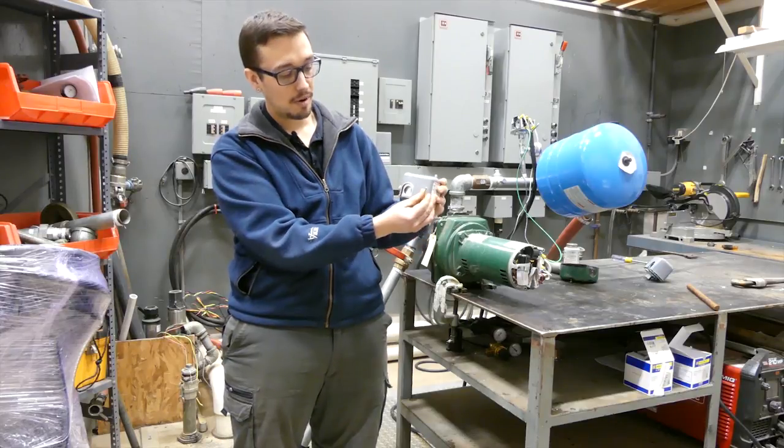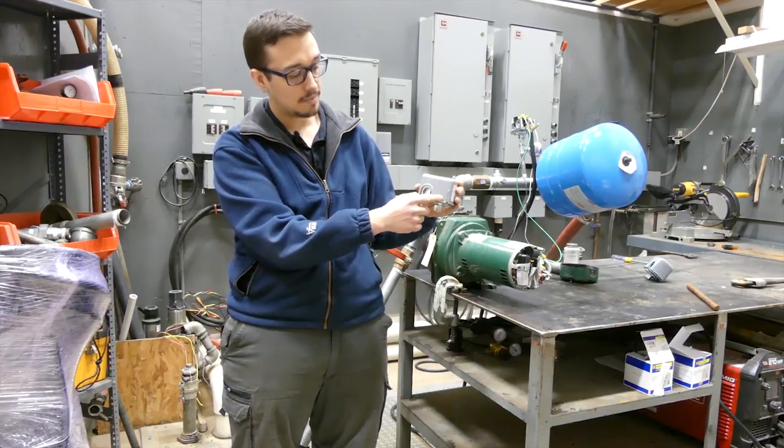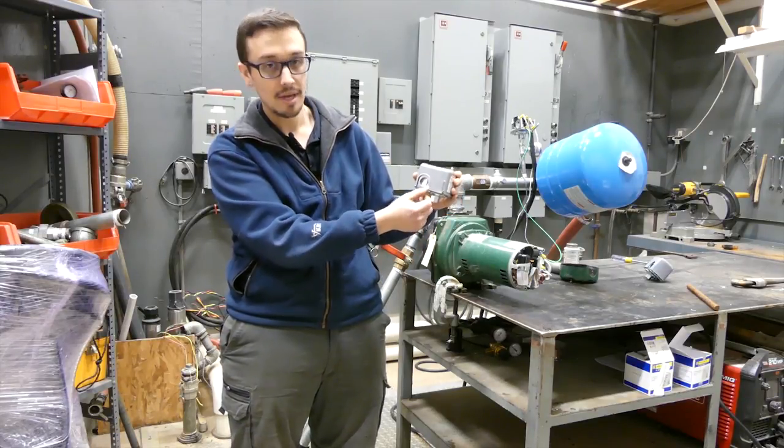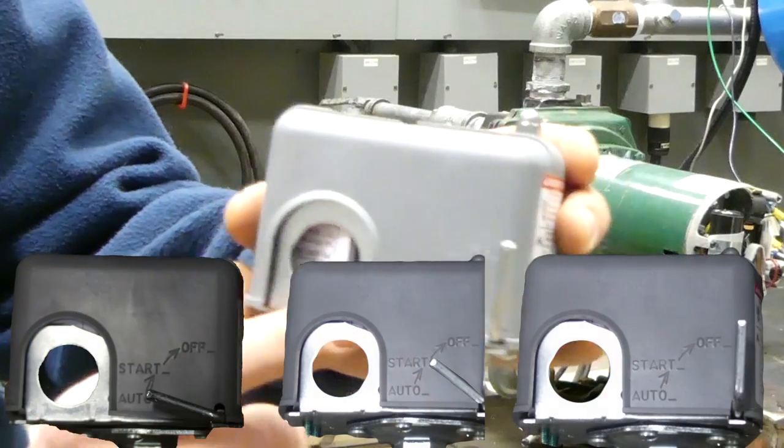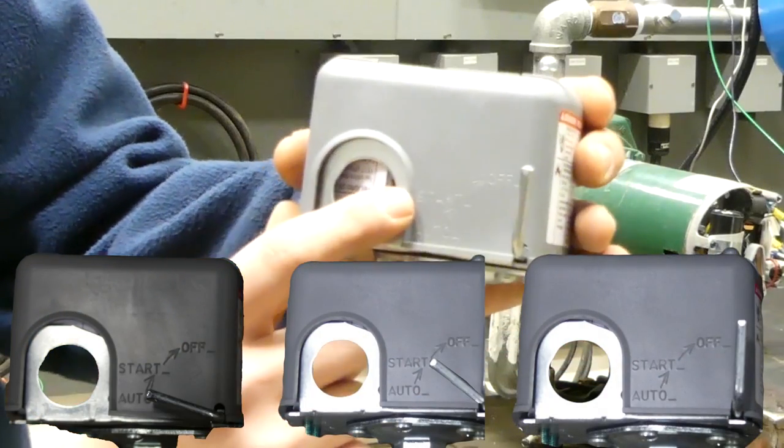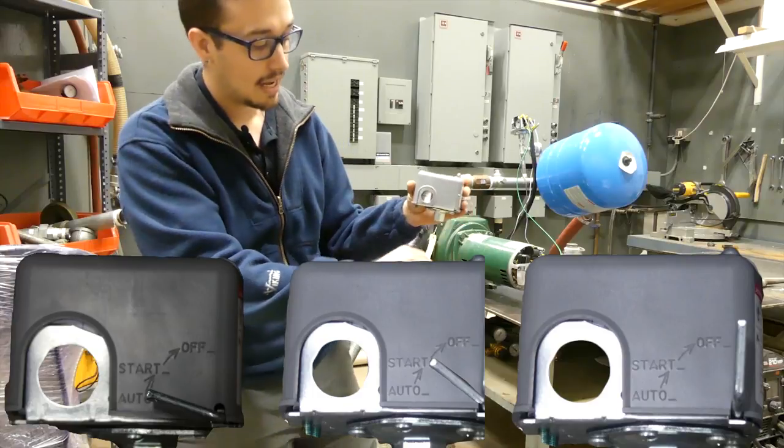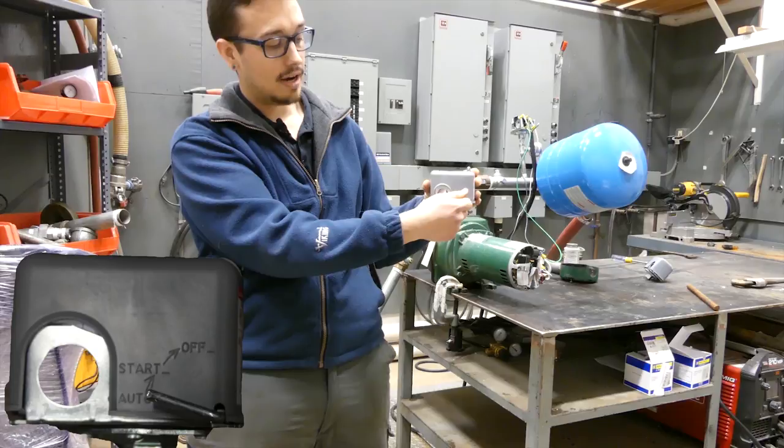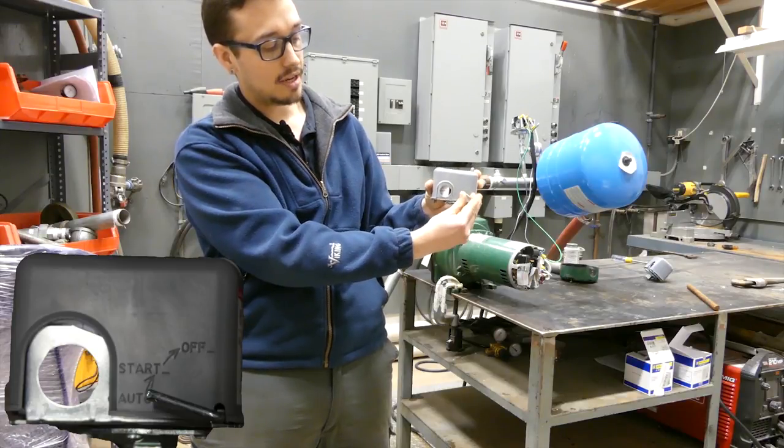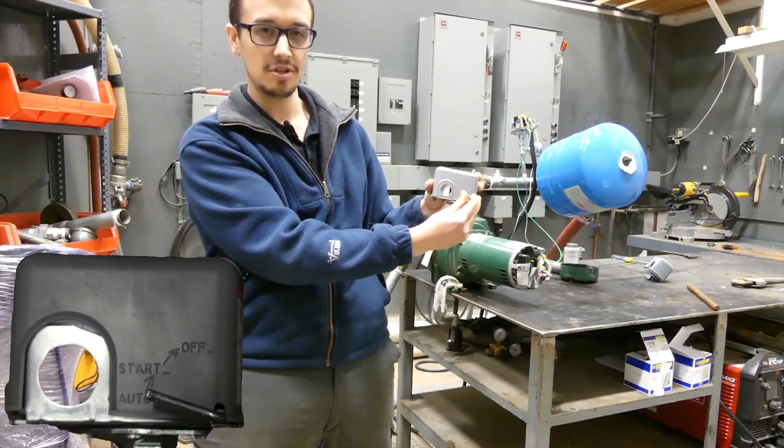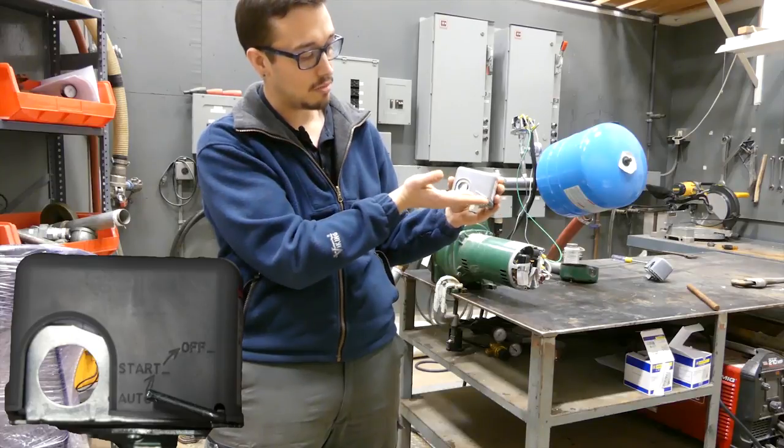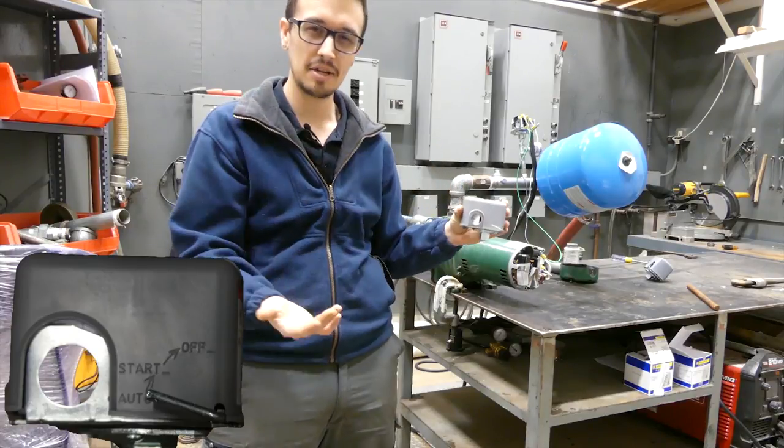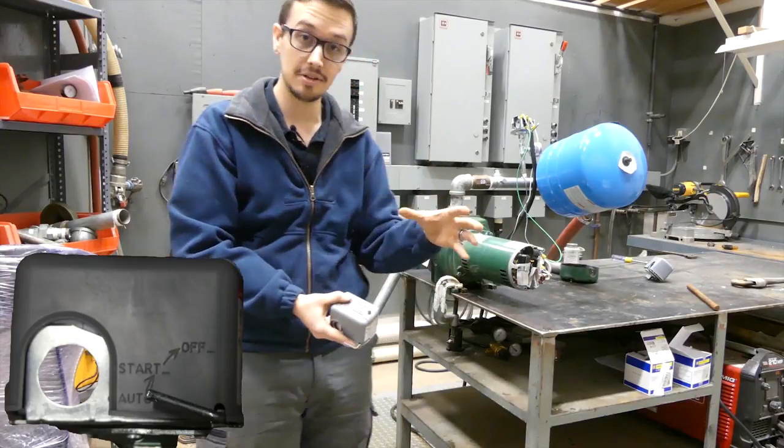It doesn't trip up all the way. There's three positions labeled on this: auto, start, and off. What it does in auto is it stays down all the way, kind of suspended. There's some resistance here, so it's kind of suspended between auto and start is the best way I can put it, and we're going to show it in just a second.